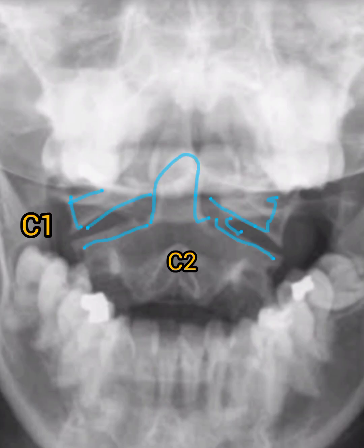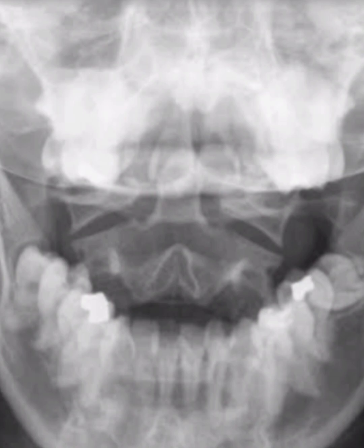Here is the open mouth view, and clearly seen are C1, C2, and the dens process of C2.